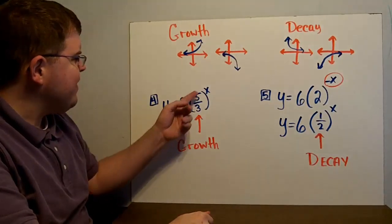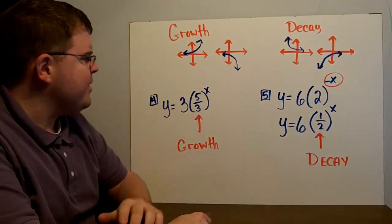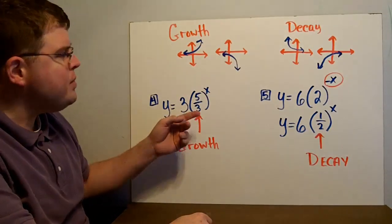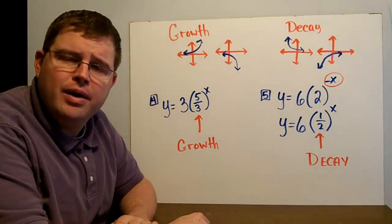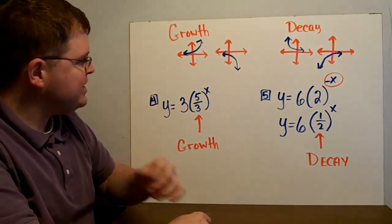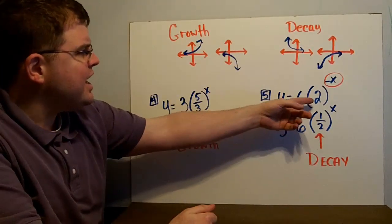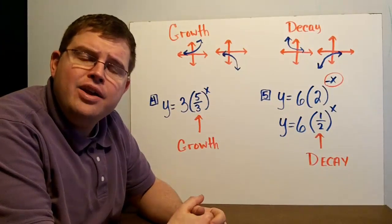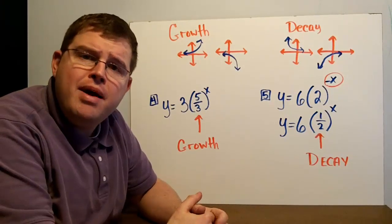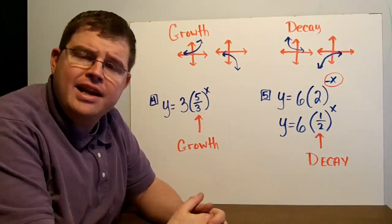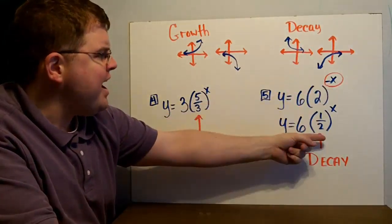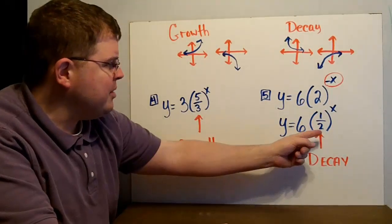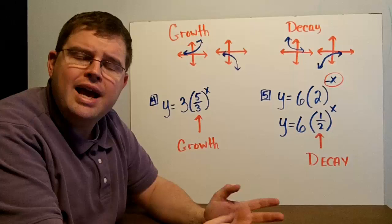In example 4, we have 3 times 5-thirds to the x — since 5-thirds is greater than 1, that's growth. In example 5, we have 6 times 2 to the negative x. When applying the growth or decay rule, you need to make sure the exponent is positive. A negative exponent flips things: 2 to the negative x becomes 1 over 2 to the positive x, and that number inside is less than 1, so it's exponential decay.